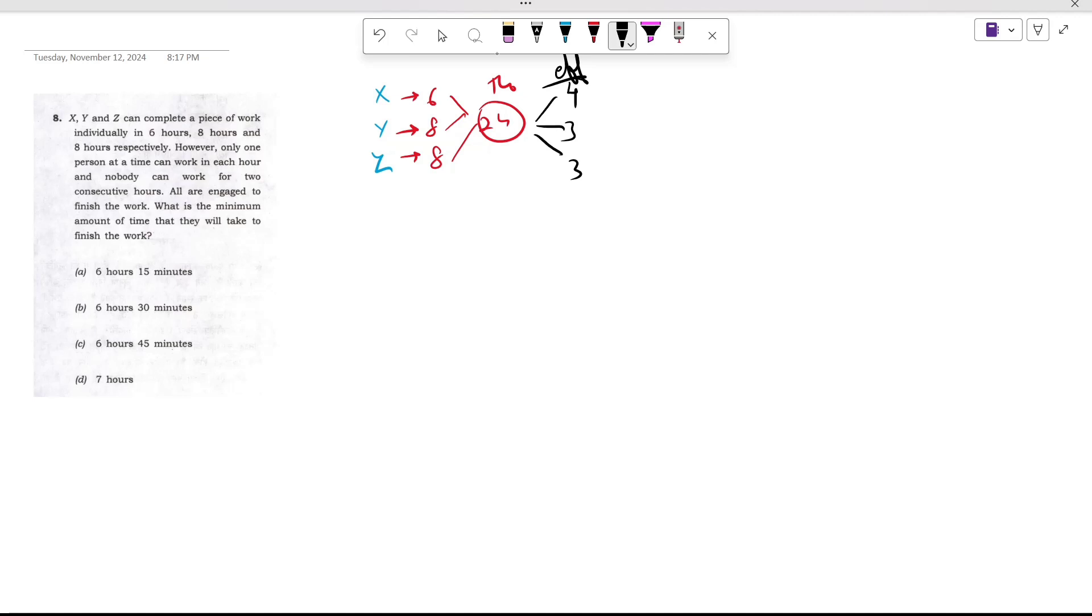So we want X to work in the first hour. He'll complete 4 units of work. In the second hour, we'll bring anyone, Y or Z, and they'll complete 3 units of work. That means in two hours, 7 units of work gets completed.